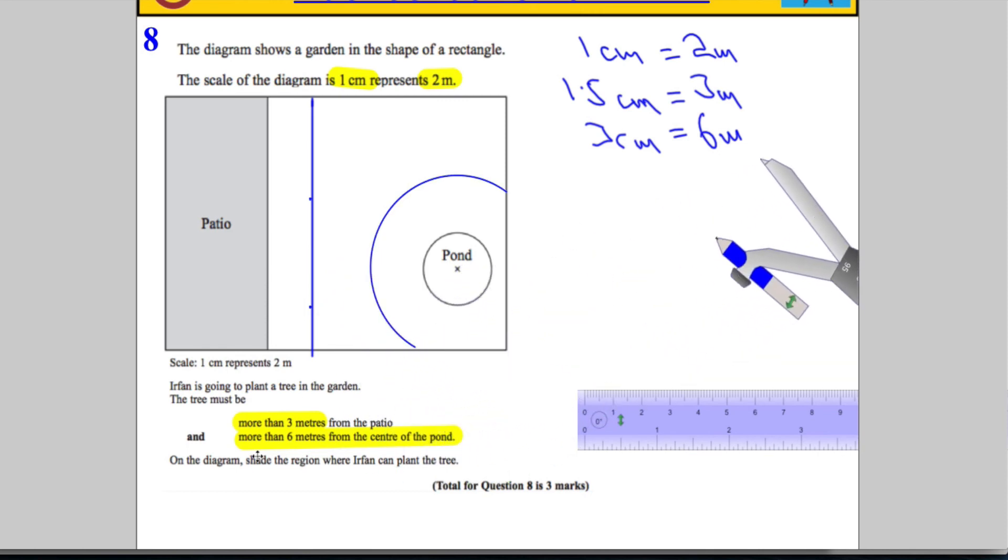And then we need to shade the region where we can plant the tree. Everywhere in here is going to be where that tree can go. So just fill that in. And then, like I said, my picture might look slightly different to what you get if you're doing it on an exam paper. That's just because I'm doing it on a computer, but the method is exactly the same.